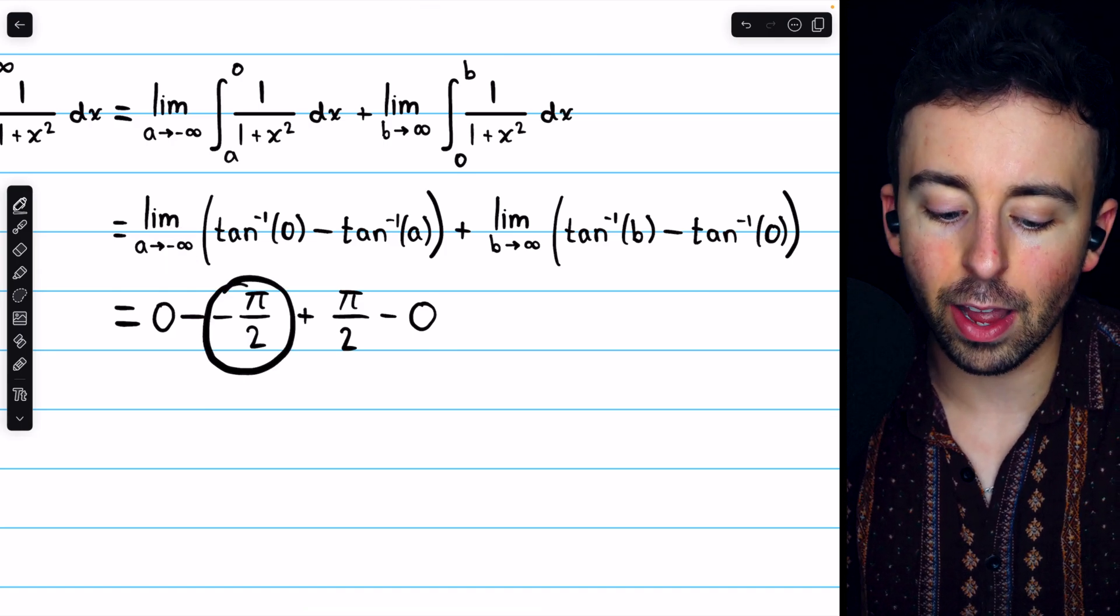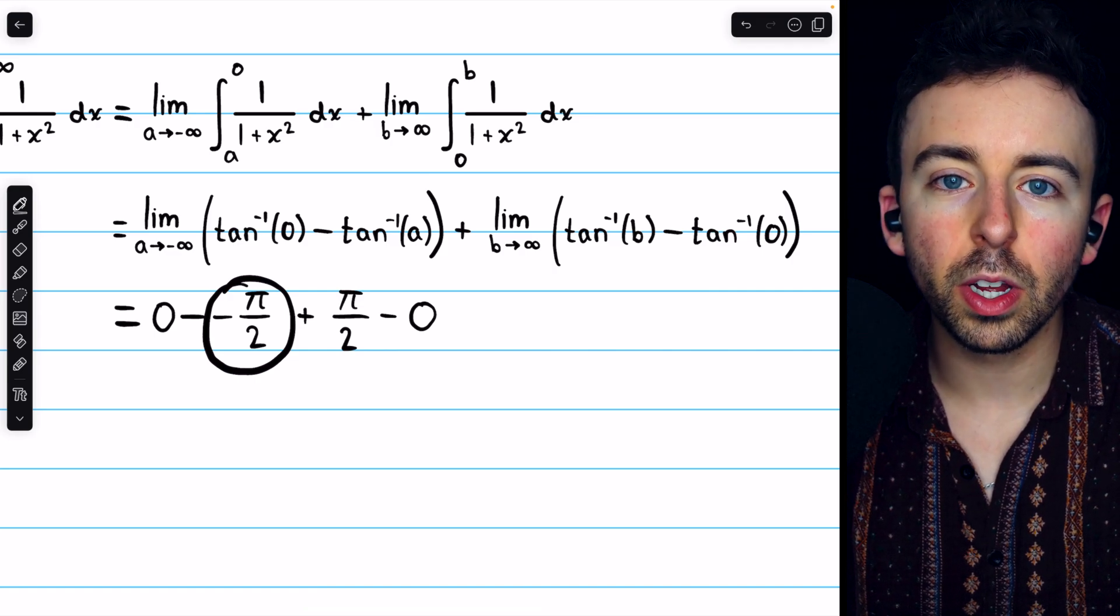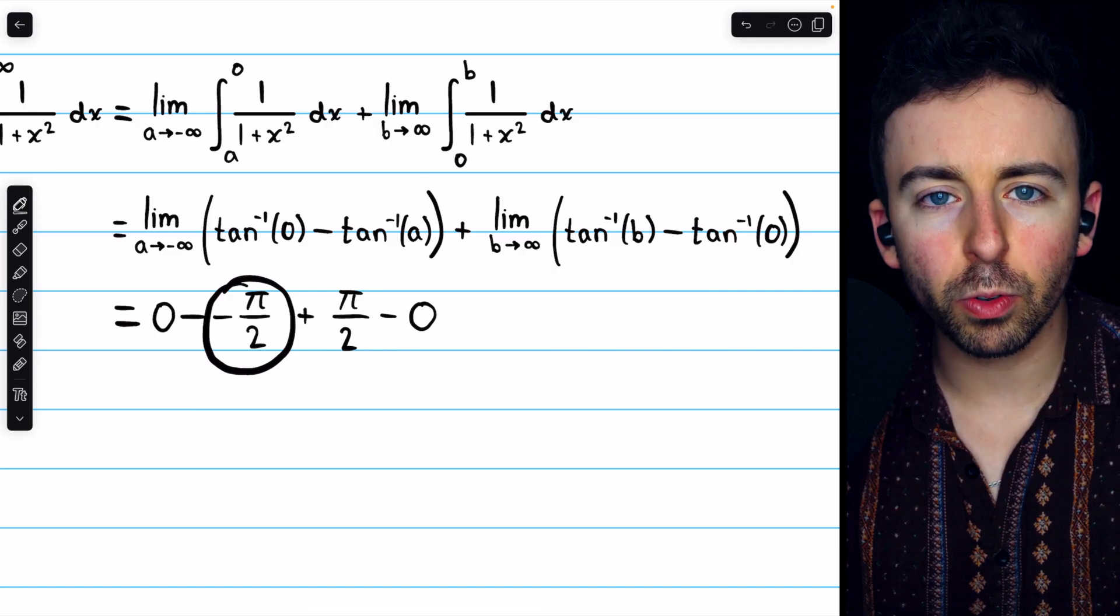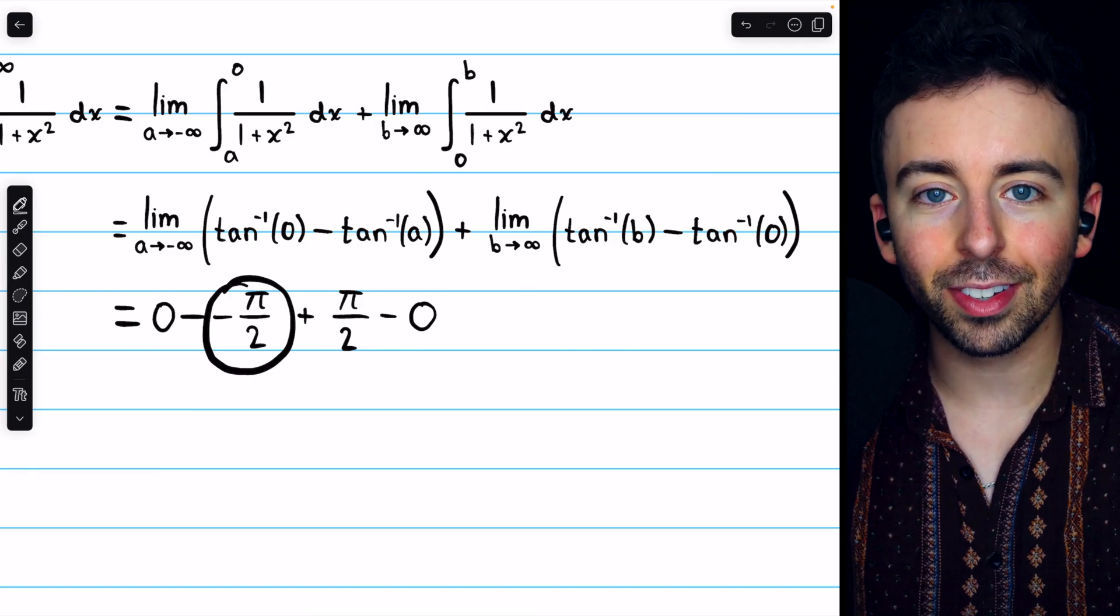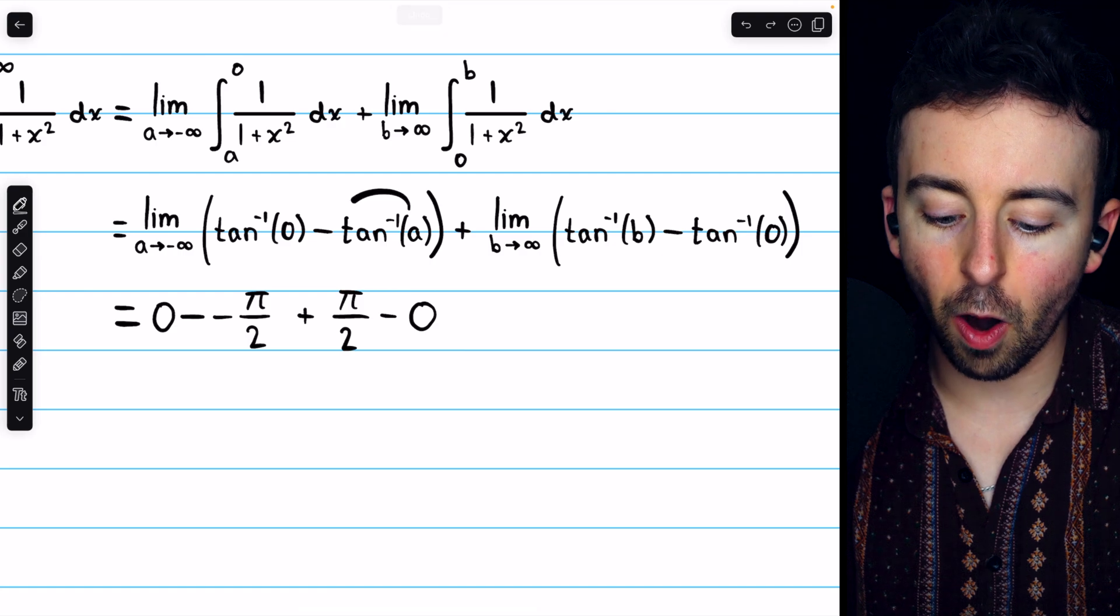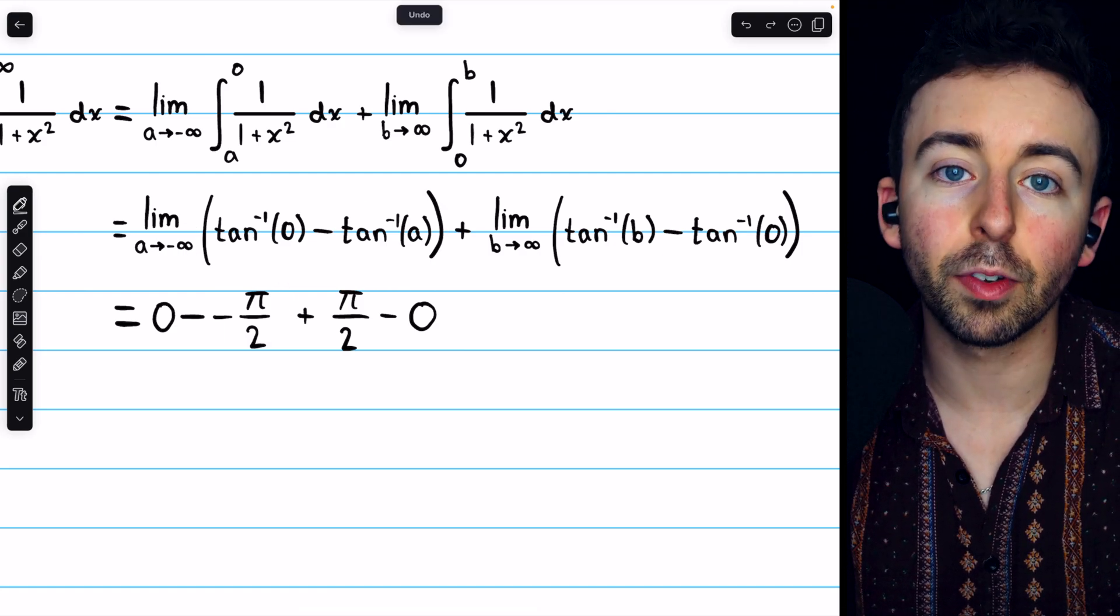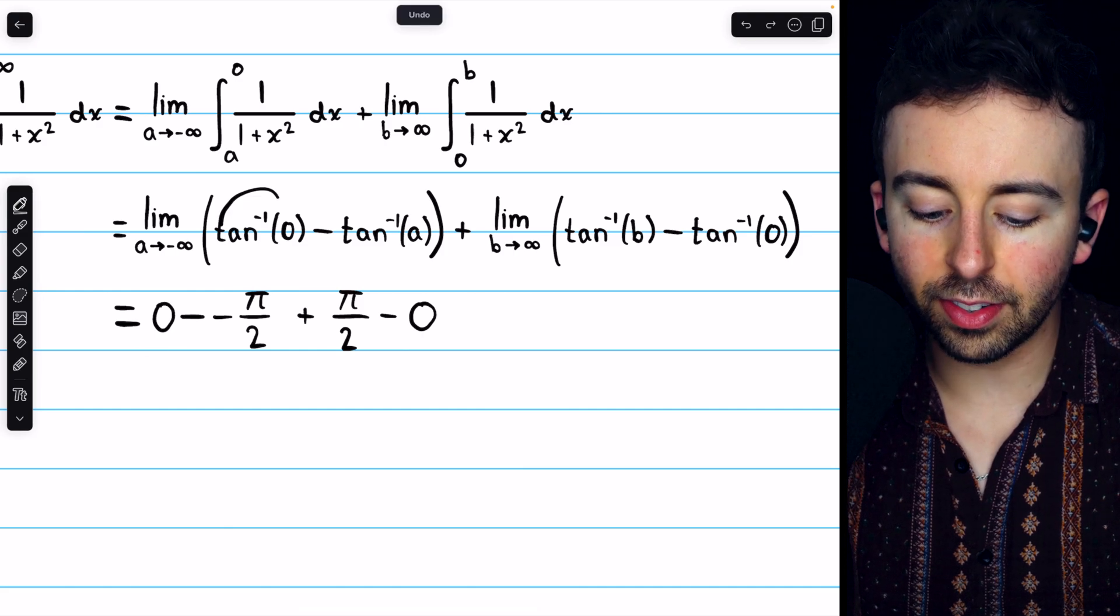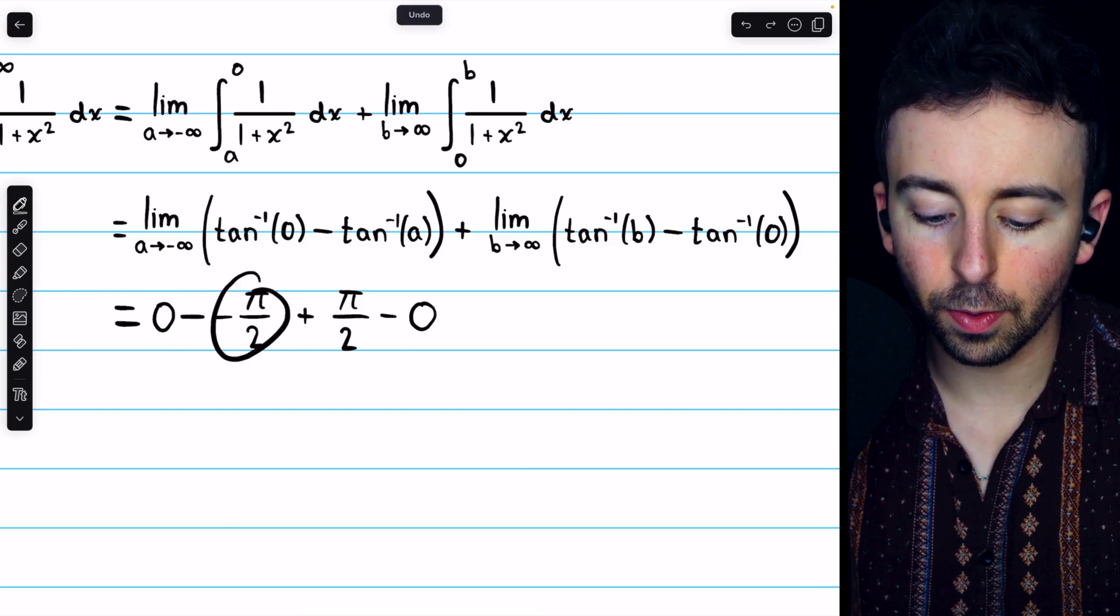If you remember your unit circle, you'll know that's negative pi over 2. As x approaches negative pi over 2, we have that sine is approaching negative 1, and cosine is approaching 0. So, that forces tangent to approach negative infinity. And so, the limit of arc tan of a, as a goes to negative infinity, is going to be negative pi over 2.